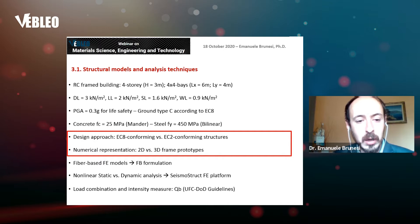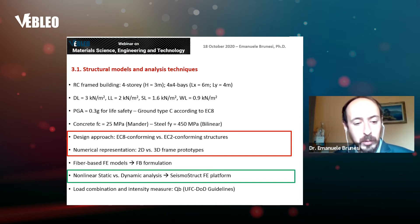Then characteristics of concrete and steel, the two design criteria considered. We ended up with EC8-conforming and EC2-conforming structures, modeled by means of 2D and 3D structural prototypes. All models were fiber-based finite element models. In particular, we consider force-based formulation for accuracy. We consider two types of analysis: nonlinear static or pushdown approach, and incremental dynamic analysis or simulation performed using the finite element platform SeismoStruct.